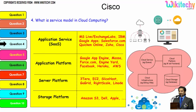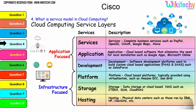Digging further into the service model: the application service layer, application platform layer, server platform layer, and storage platform — provided by Amazon S3, Dell, and Apple — are all part of the cloud stack. The important service layers are services, application, development platform, storage, and hosting. These are some typical examples under these particular services and are important topics frequently asked about in interviews on cloud computing.